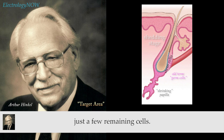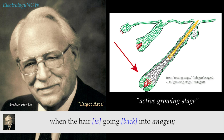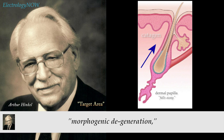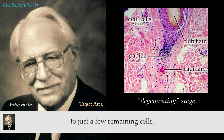The dermal papilla cells, through a process of degeneration, reduce to just a few remaining cells. These cells undergo mitotic increase and become a greater number when the hair goes into anagen — its active growing stage. But when the hair goes into catagen, the dermal papilla starts to fall away. Cells go through a morphogenic degeneration — the reverse of mitosis — one dies off, then another, and the cells that die off are carried away by the bloodstream as waste matter.